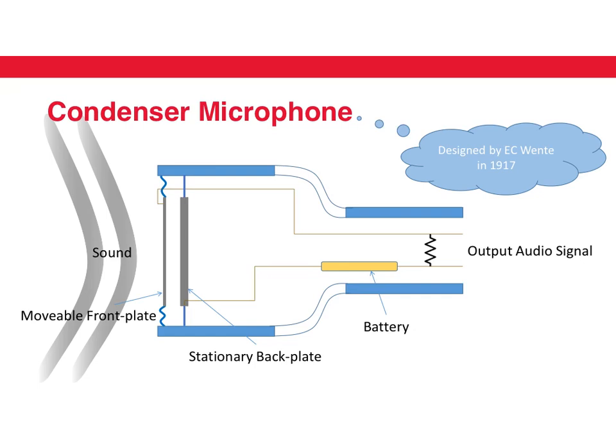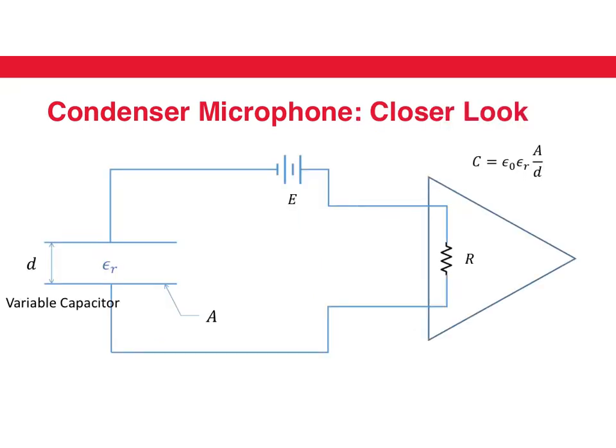So let's see how this works. The equivalent circuit of a condenser microphone is shown here, so we have a capacitor which changes and responds to sound, and we have a voltage supply and the resistance attached. The output voltage across the resistance is picked up and amplified further.